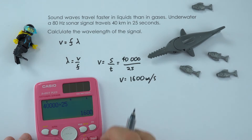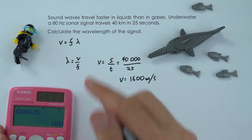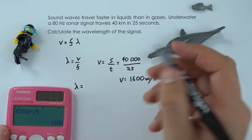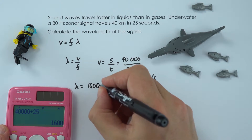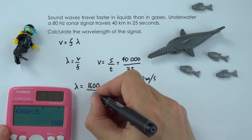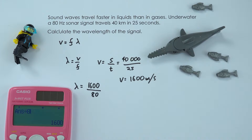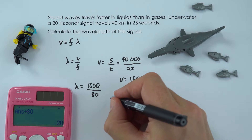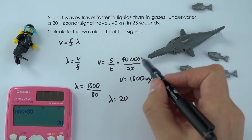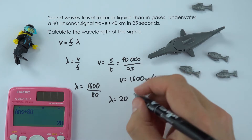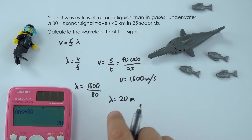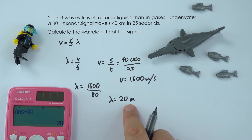I can then use this data and put it into my equation to say that the wavelength is equal to the wave speed, which is 1600 metres per second, divided by the frequency, which is given as 80 hertz. Dividing that by 80, the wavelength is equal to 20 metres.